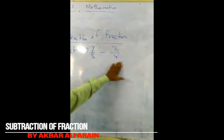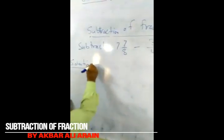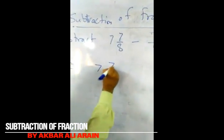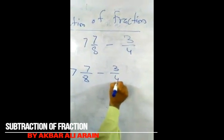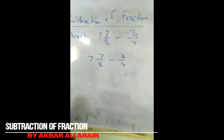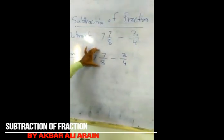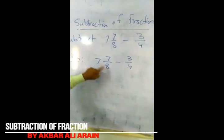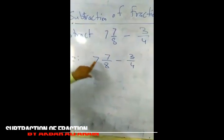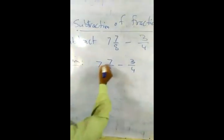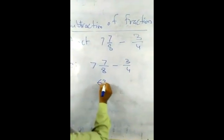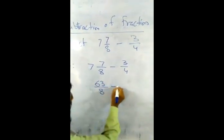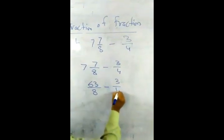Solution: As it is, 7 whole 7 upon 8 minus 3 upon 4. Now we will change to improper fraction.